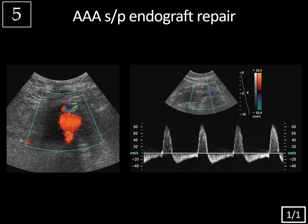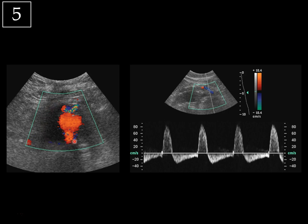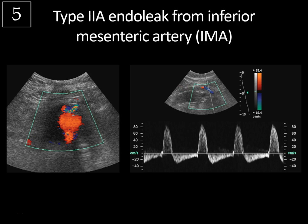Case 5: ultrasound from an abdominal aortic aneurysm status post endograft repair. On the transverse image, flow within the endograft is normal, and there's no flow within the excluded aneurysm sac — also normal. However, there's a tubular area anteriorly with very turbulent flow. On the sagittal color image it's tubular and linear, extending outside the aneurysm sac. The spectral Doppler waveform shows a to-and-fro pattern — retrograde diastolic flow then antegrade systolic flow — bidirectional flow going in and out of the excluded sac. This is typical for a type 2 endoleak from the inferior mesenteric artery.